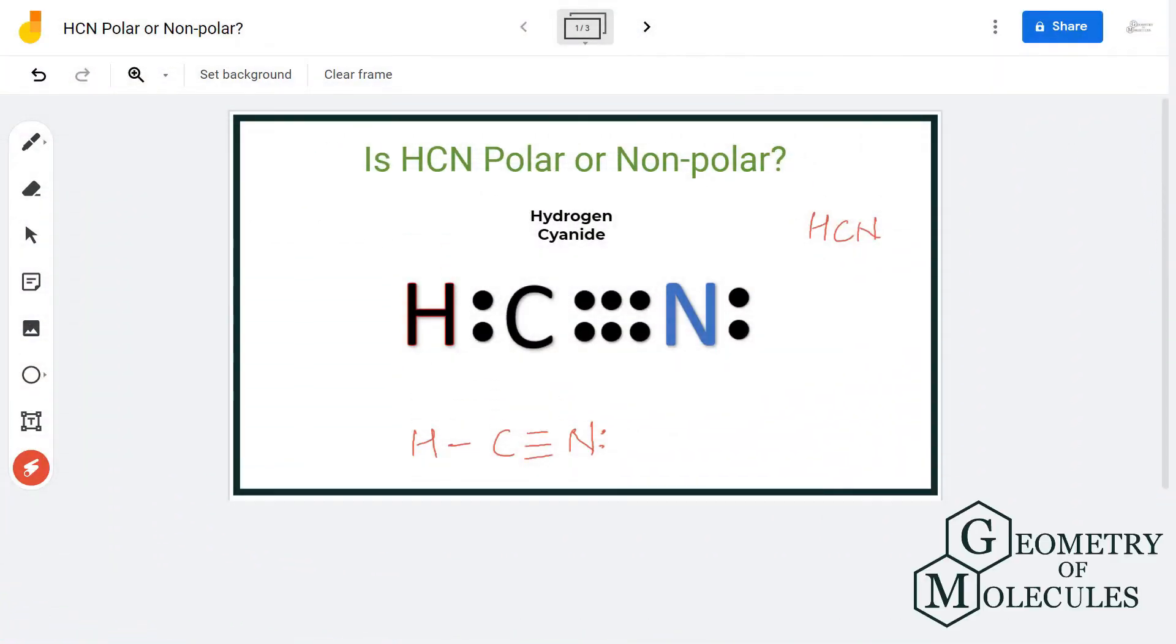Hi guys, in this video we are going to determine the polarity of HCN. Now HCN is a chemical formula for hydrogen cyanide and it is made up of three atoms: hydrogen, carbon, and nitrogen.